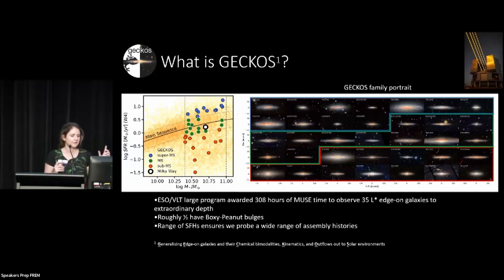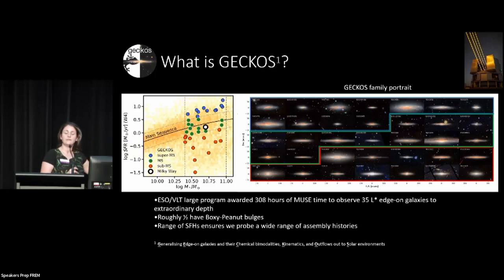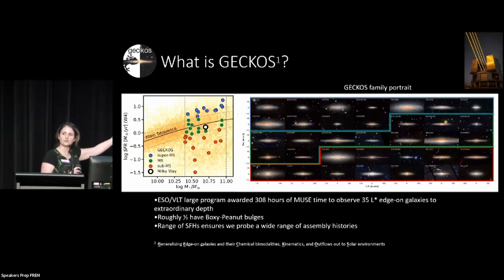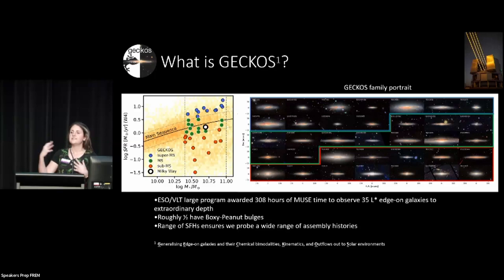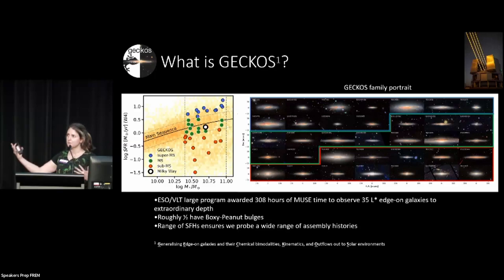Very importantly, we also have a range of star formation rates. We've got a super main sequence, a main sequence, and a sub main sequence sample, all seen in our beautiful family portrait arranged by star formation rate. A range of star formation rates at similar mass probably means a range of assembly histories, so we're really probing the whole spectrum of disk galaxy assembly histories at Milky Way mass.